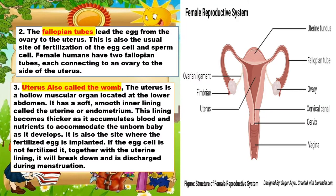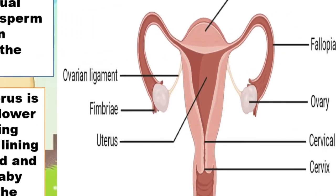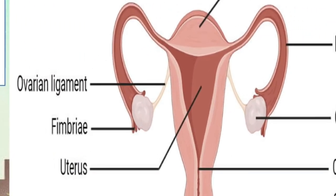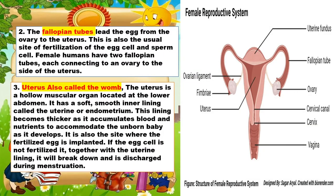The third one is the uterus, also called the womb. The uterus is a hollow muscular organ located at the lower abdomen. It has a soft, smooth inner lining called the uterine lining or endometrium. This lining becomes thicker as it accumulates blood and nutrients to accommodate the unborn baby as it develops. It is also the site where the fertilized egg is implanted. If the egg cell is not fertilized, together with the uterine lining, it will break down and be discharged during menstruation.